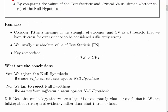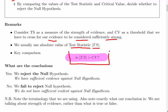A few remarks about that. We consider the test statistic as a measure of the strength of evidence and the critical value as a threshold that we must cross for our evidence to be considered sufficiently strong. We usually use the absolute value of the test statistic because it makes this decision rule much easier to understand. This decision rule can be applied in pretty much every hypothesis test that you would see in an exam situation.